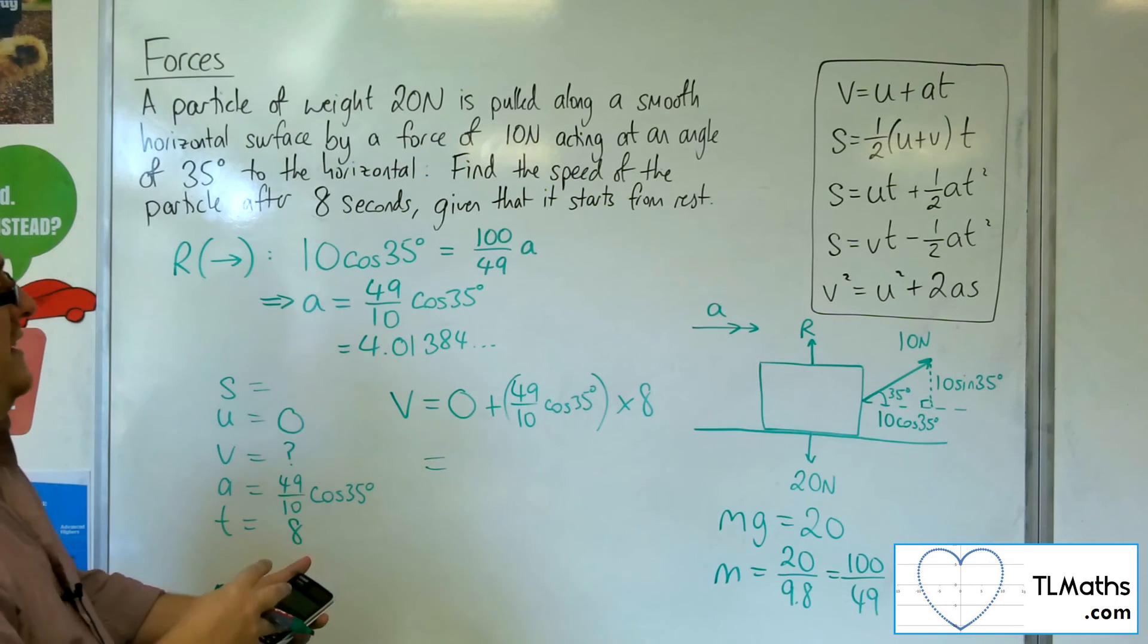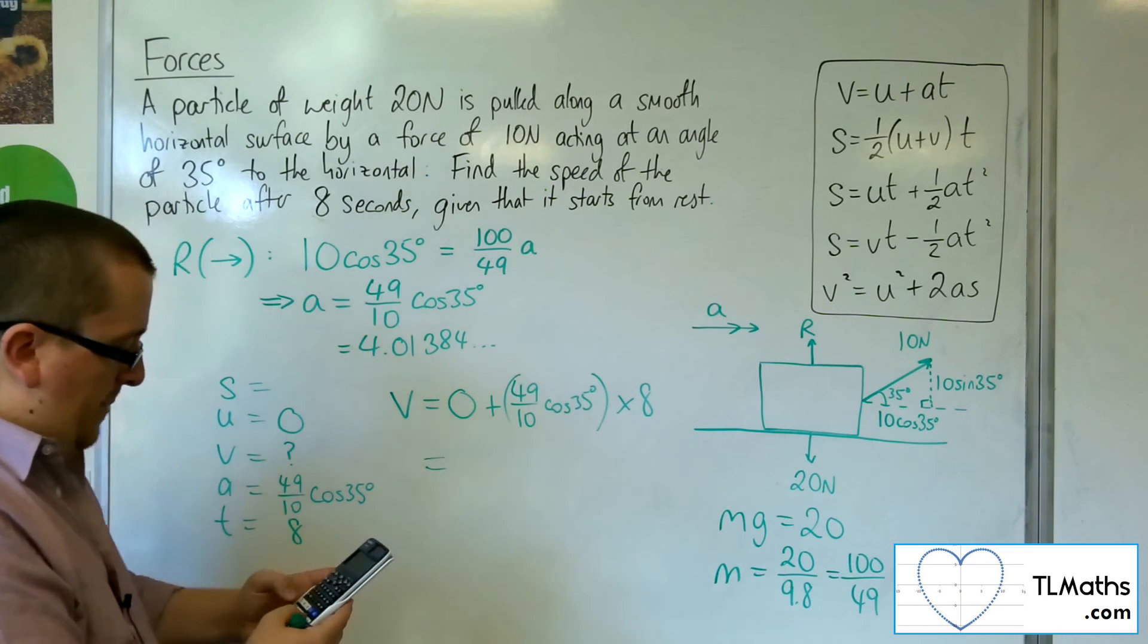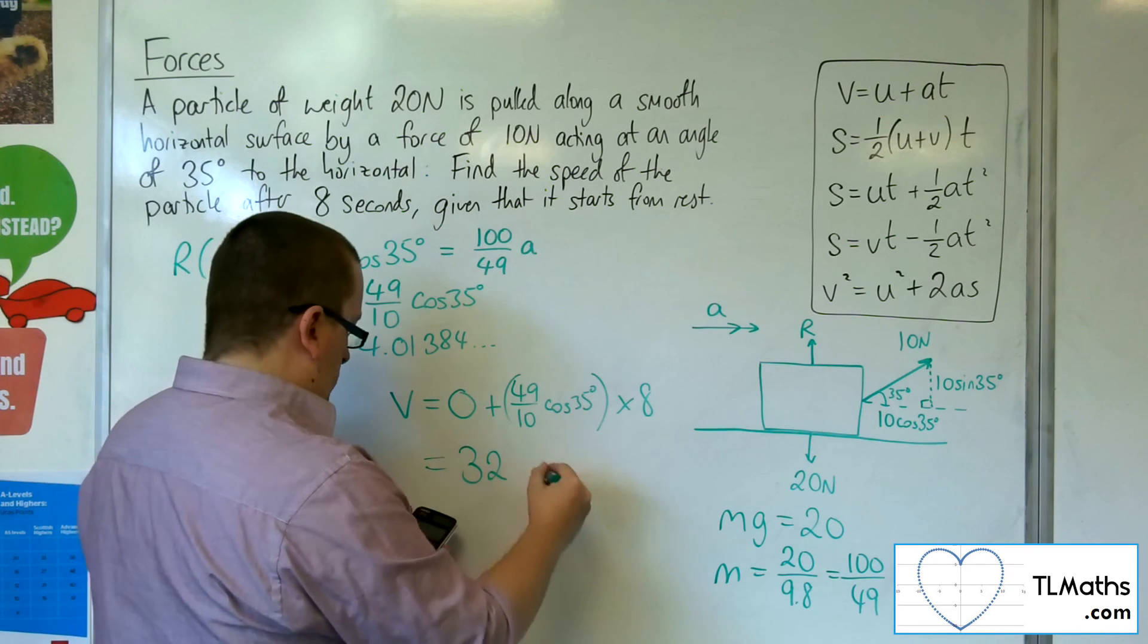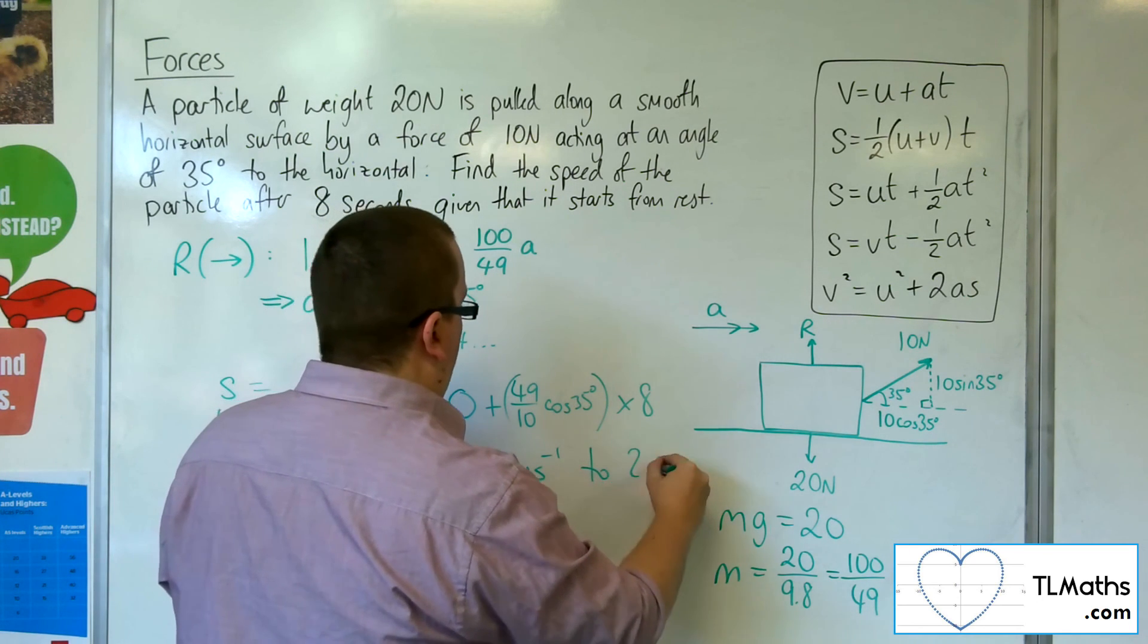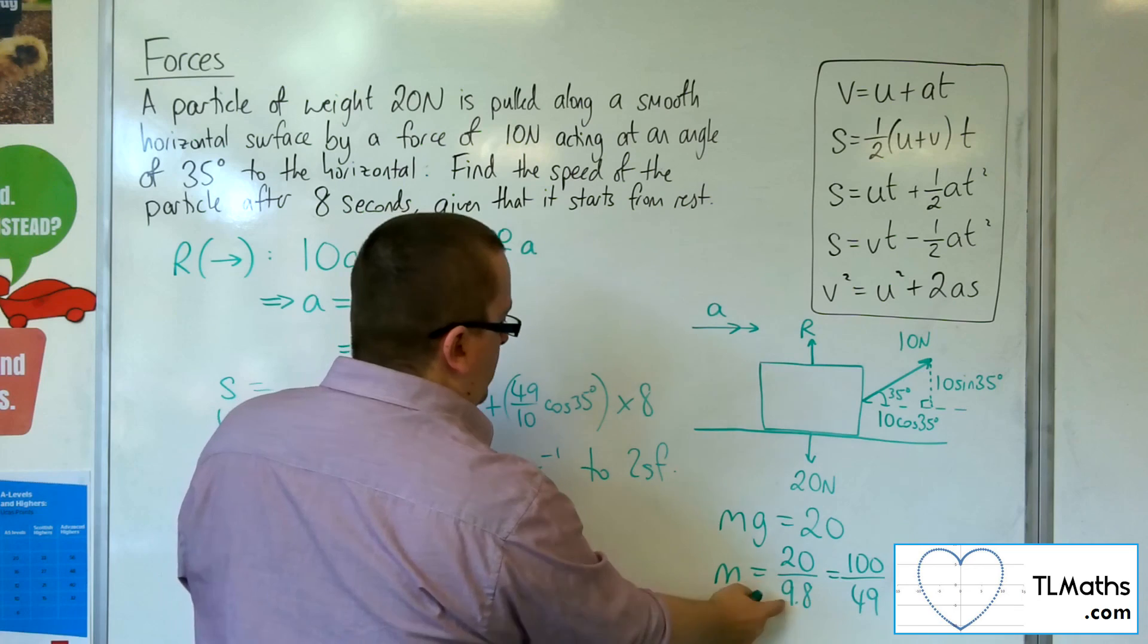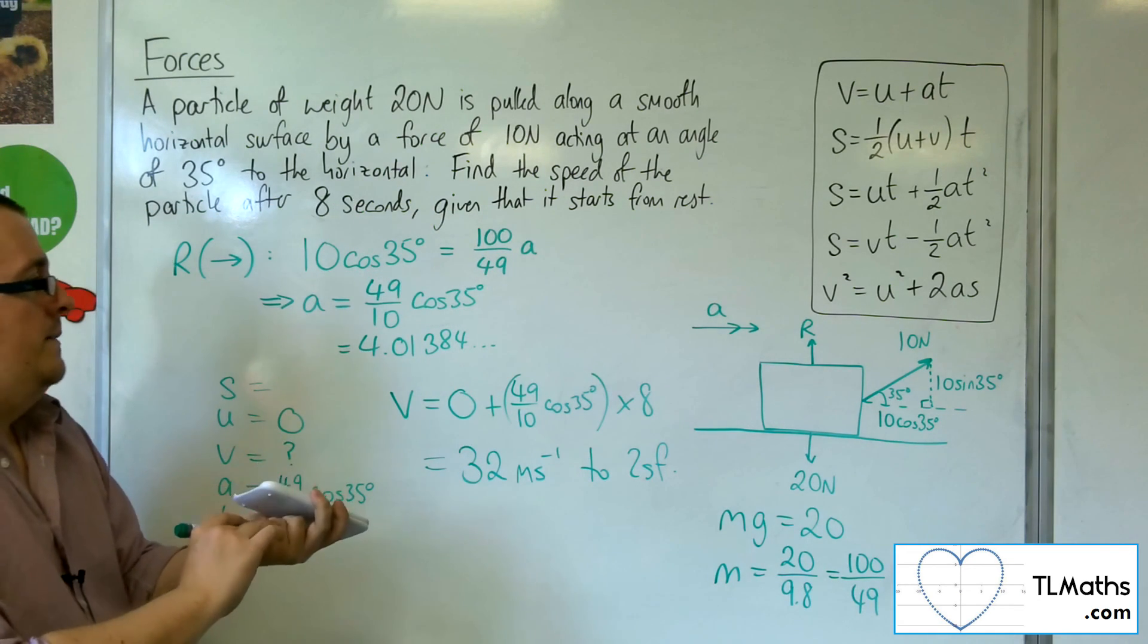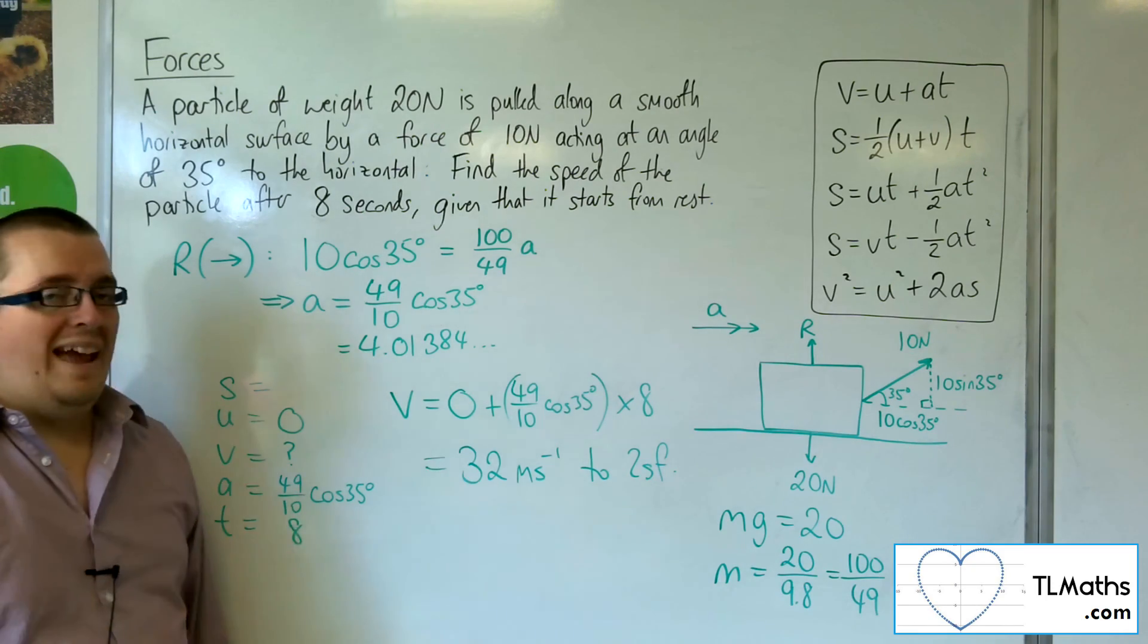So, I've conveniently still got that 4.01384 into my calculator. So, I just need to multiply that by 8. And that gets me the velocity, which is 32 metres per second to two significant figures. Because my gravity was to two significant figures, so this should be as well. So, that's how I can find the velocity of this particle after 8 seconds.